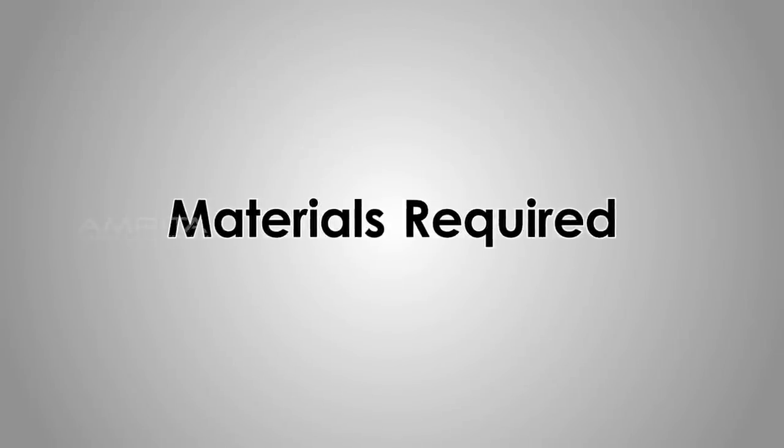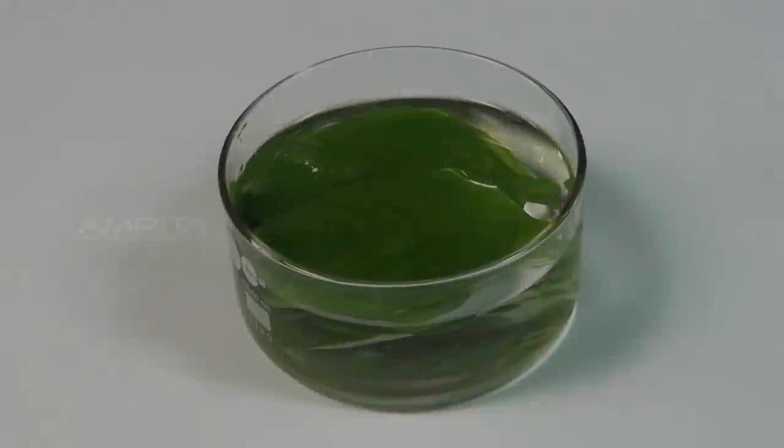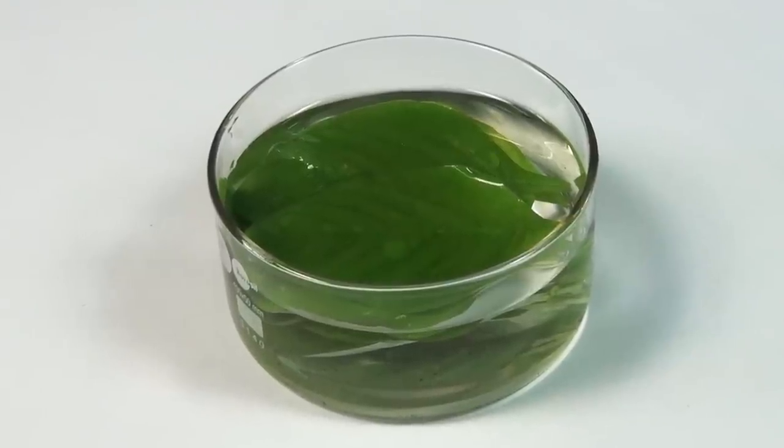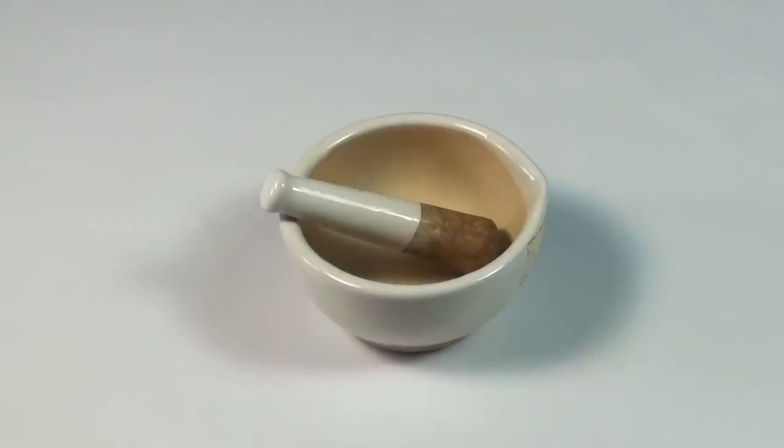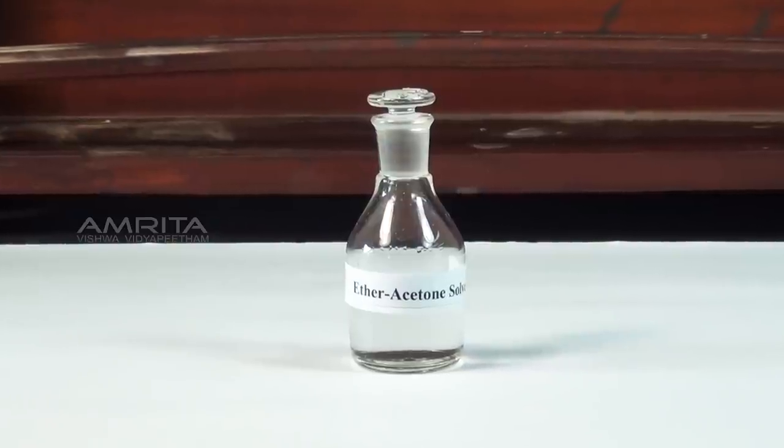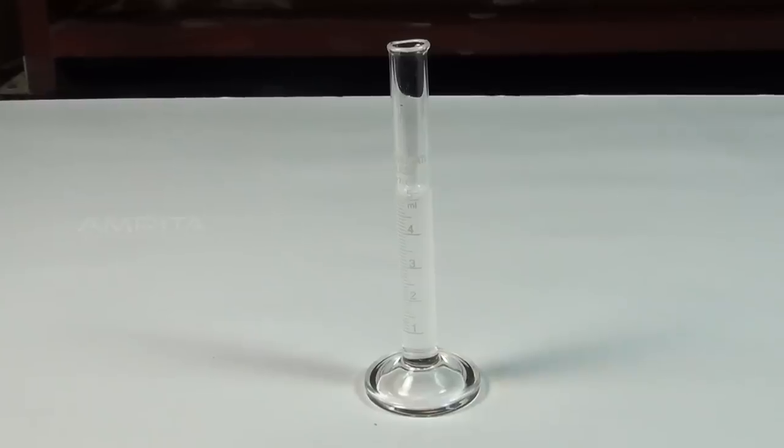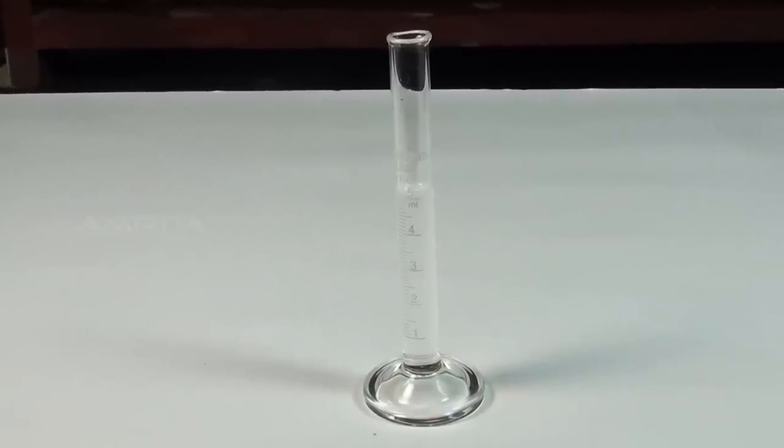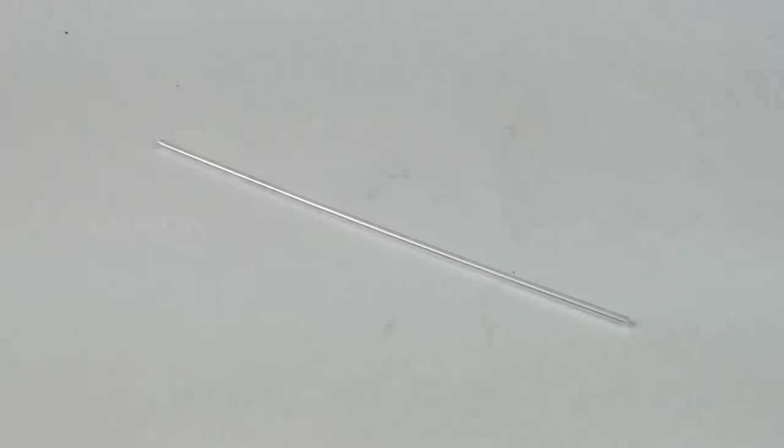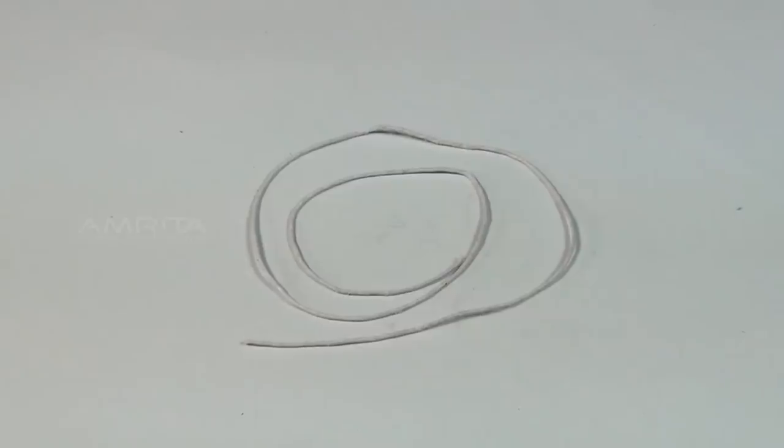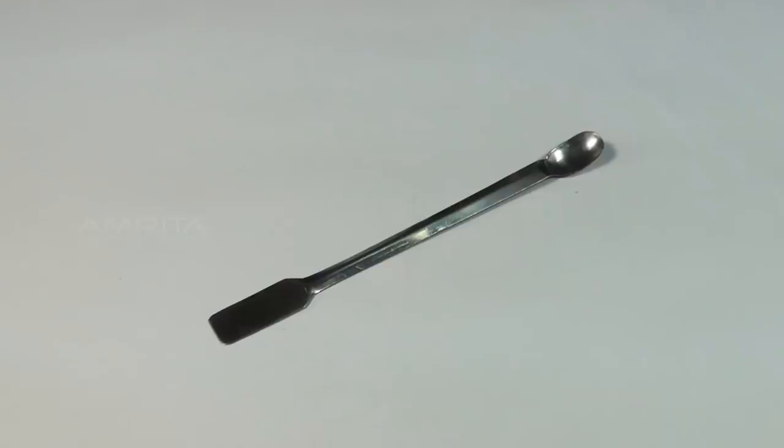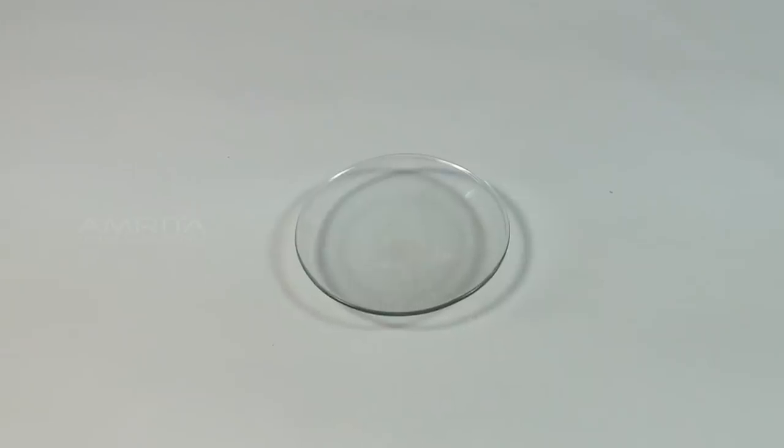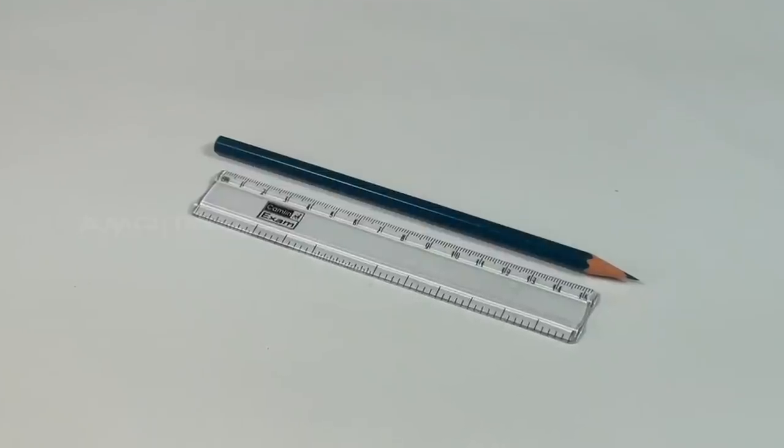Materials required: fresh spinach leaves, filter paper strips, chromatography chamber, mortar and pestle, ether acetone solvent, measuring cylinder containing 5ml acetone, capillary tube, thread, stapler, scissors, spatula, watch glass, scale and a pencil.